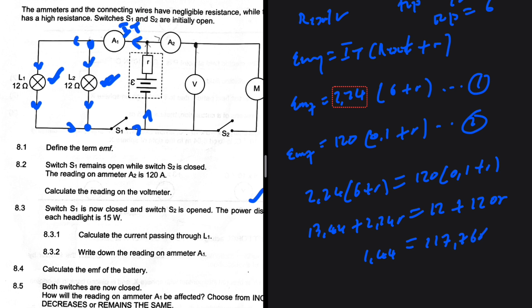1.44 is equal to 120 minus 2.24, which is 117.76R. So 1.44 divided by 117.76. 0.01. So the internal resistance is 0.0122. Not quite happy with that internal resistance, to be honest.